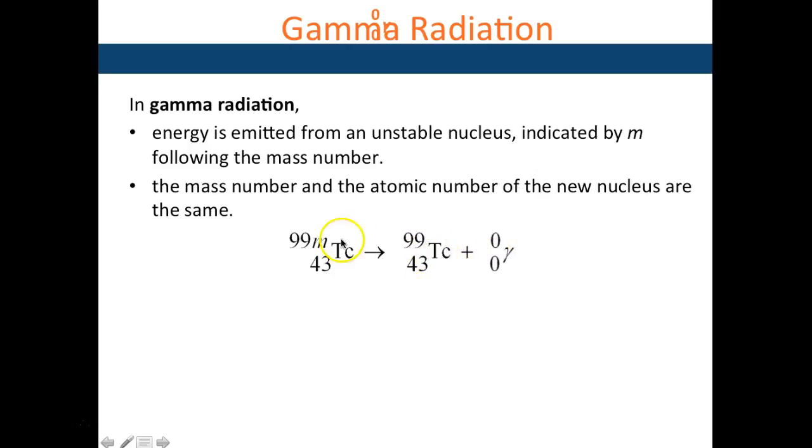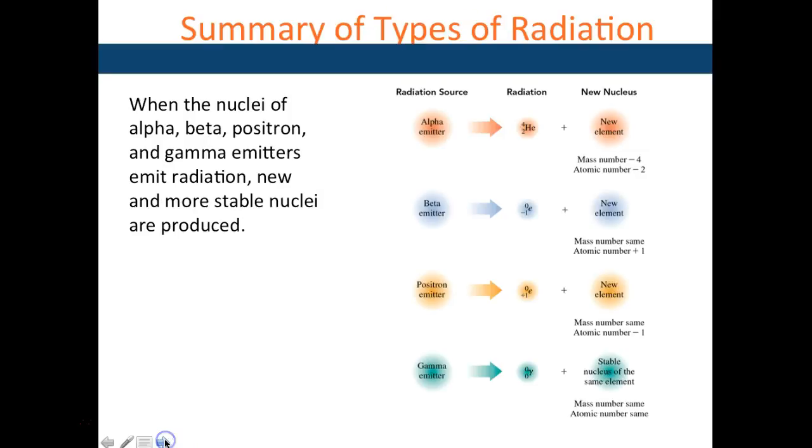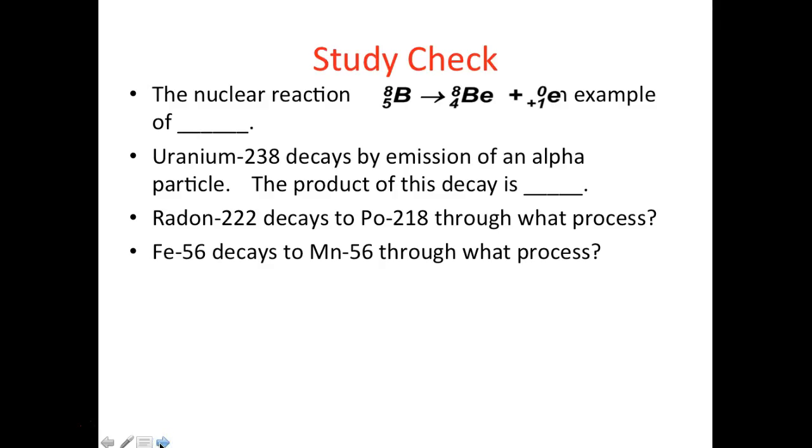To summarize: alpha emitters - the new element mass has gone down by 4, atomic number by 2. Beta emitter - mass is the same, atomic number increased by 1. Positron - mass is same, atomic number decreased by 1. And gamma emitter goes from a less stable nucleus to more stable.